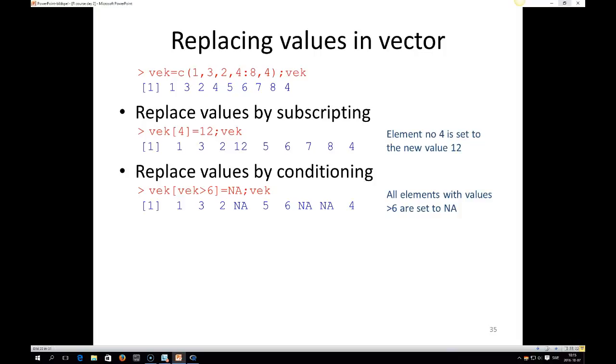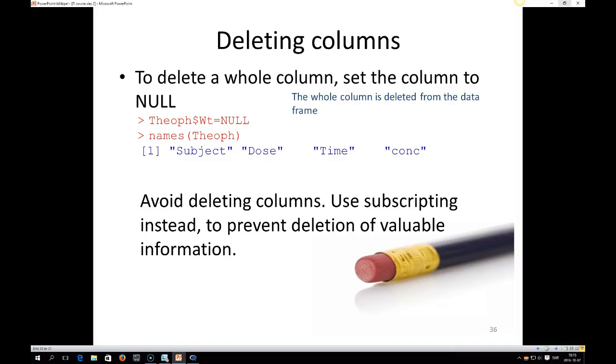If you have a dataset where you would like to delete a column, you should set the whole column to null. So if you would like to remove the weight column from the Theoph dataset, you say Theoph $wt is equal to null, and then if you look at the column names of Theoph by using names, you see that there is